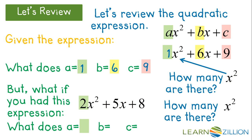How many x squareds are there? 2. b equals 5. c equals 8.